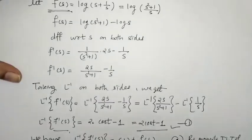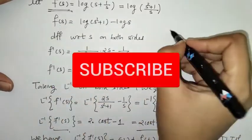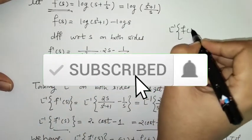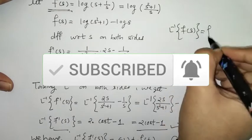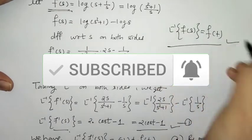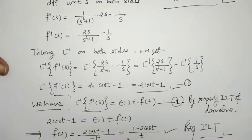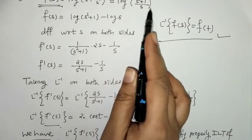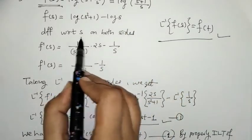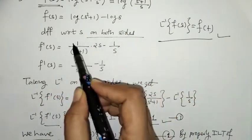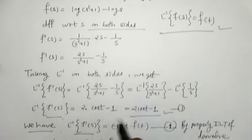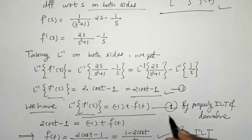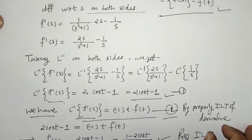So when we have F(s) = log((s+1)/s), the required L-inverse of F(s) is f(t) = (1 − 2cos(t))/t. The approach is: differentiate F(s) with respect to s to get an algebraic function, then use the property to recover f(t).